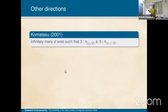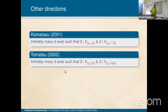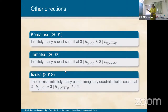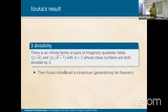Tomatsu proved in 2001 that for Q(√D) and Q(√(−D)), both class numbers are divisible by 3. In 2002, Tomatsu showed there are infinitely many D such that 3 divides both the class numbers of Q(√D) and Q(√(mD)) for any m. There is another result by Iizuka in 2018: there exist infinitely many pairs of imaginary quadratic fields such that 3 divides the class numbers of Q(√D) and Q(√(D+1)) — consecutive fields.